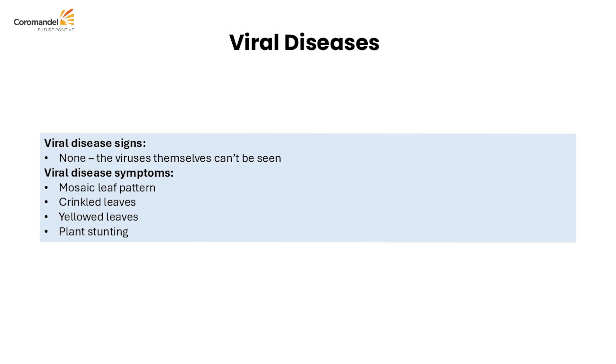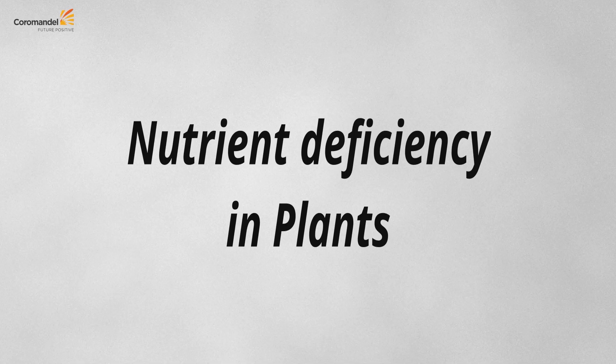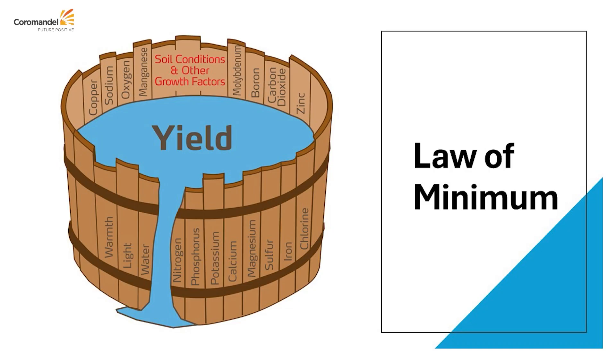If none of these three conditions are present, we can conclude it is nutrient deficiency. For plant growth and development, 17 essential nutrients are needed. Carbon, hydrogen, and oxygen come from air and water. Then the macronutrients NPK, secondary nutrients calcium, magnesium, and sulfur, plus micronutrients. By the law of the minimum, if one nutrient is deficient it limits the yield — just like a leaking barrel. All nutrients are essential for plant growth and yield.